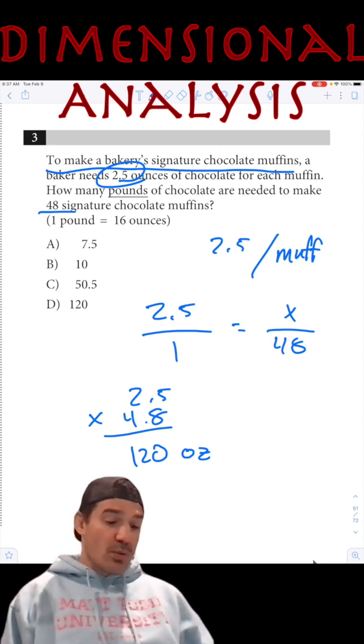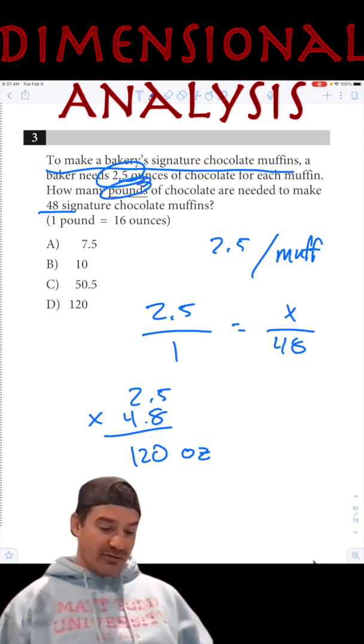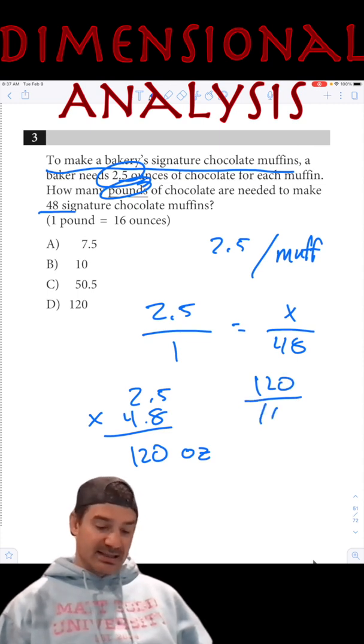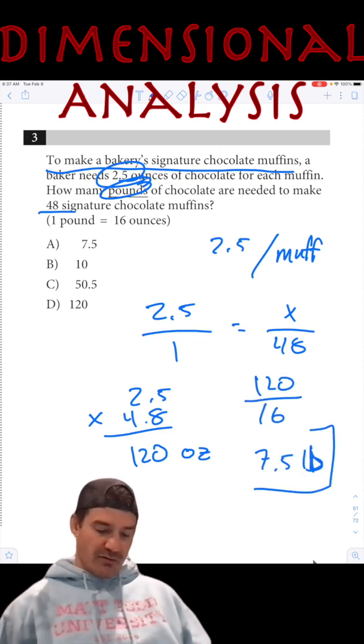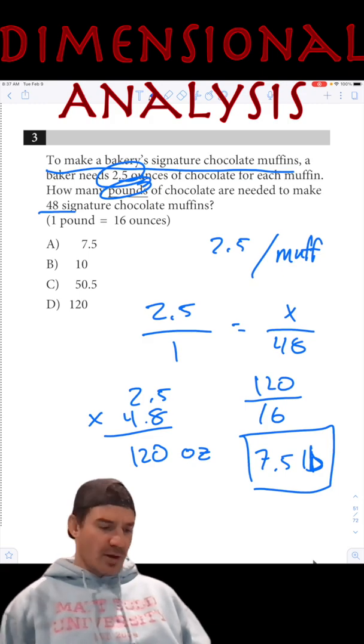Now the issue is we want the pounds. So all we have to do is 120 ounces divided by 16. Boom. 7.5 pounds. There we go.